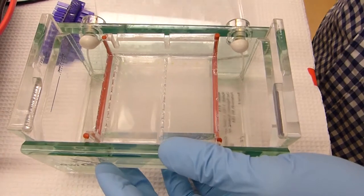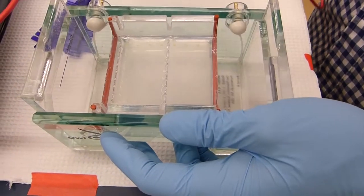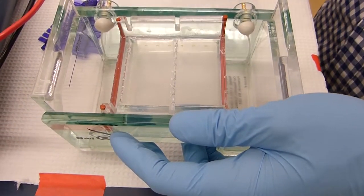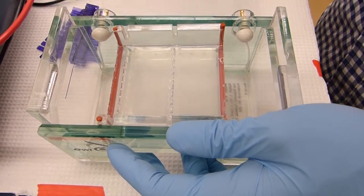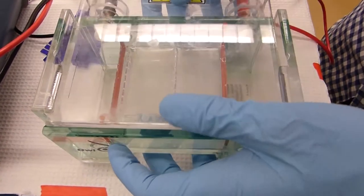You want the side with the holes by the black node, because DNA is negative so it will run to the positive node. So you want to run to red.